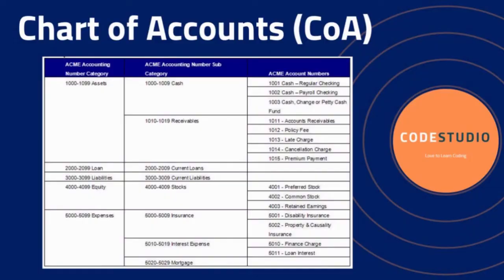So what is a chart of accounts? A chart of accounts is a list of accounts used to record transactions in a company's general ledger during the accounting cycle. It is used to perform general entries, and all these accounts are divided into five categories: assets, liabilities, owner's equity, revenue, and expenses. Each company will have its own chart of account numbering system and can assign a number for identification purposes.